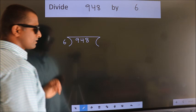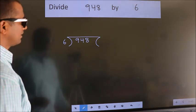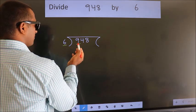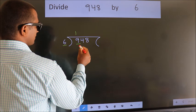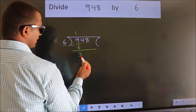This is your step 1. Next, here we have 9, here 6. A number close to 9 in 6 table is 6 once 6. Now, we should subtract. We get 3.